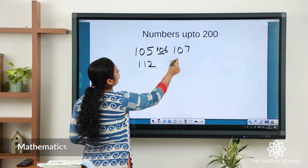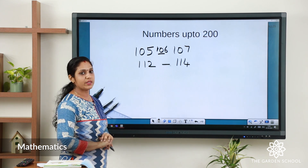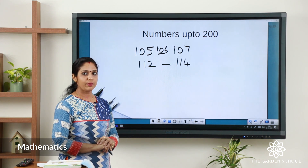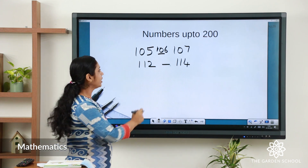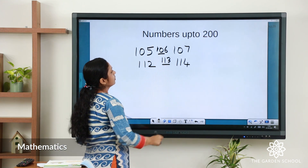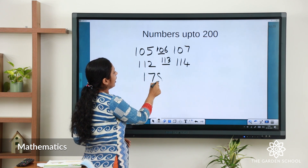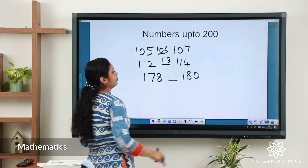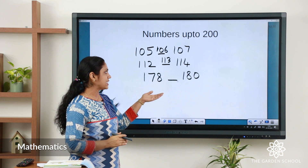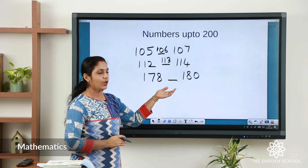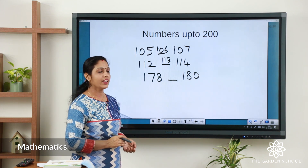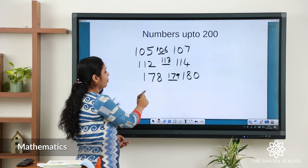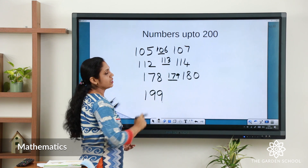More examples: between 112 and 114 — count 112, 113, 114 — the missing number is 113. Between 178 and 180 — count 178, 179, 180 — the missing number is 179. After the number 199, the next number is 200, which we write as 'two hundred.'